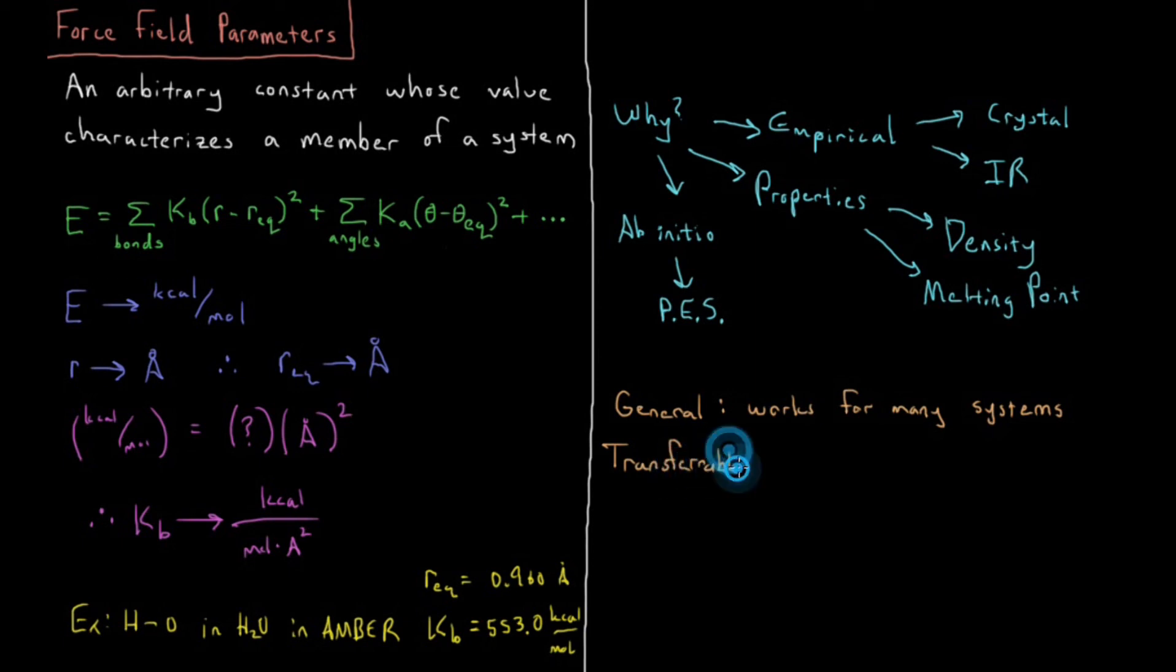You'd like your parameters to be transferable. You'd like to have the same or similar parameters for many systems. My CH2 groups in butane, I'd like my CH2 groups in pentane to behave similarly. I'd like the OH bond in ethanol to behave pretty similarly to the OH bond in methanol or propanol. I'd like my carbonyl bond in acetone to be the same thing as if it was an ethyl group on each side or a propyl group on each side. My carbonyl bond is pretty much unaffected in its properties, only a little bit different.